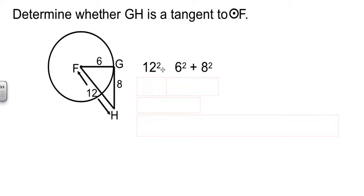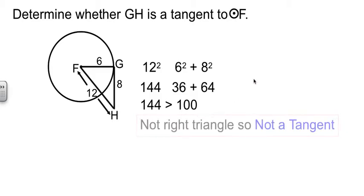So 12 is our candidate for the hypotenuse. 12 squared is 144. 6 and 8 are our candidates to be the two legs. 6 squared and 8 squared, 36 and 64 makes 100. 144 is bigger than 100. It's not equal. So it's not a right triangle.